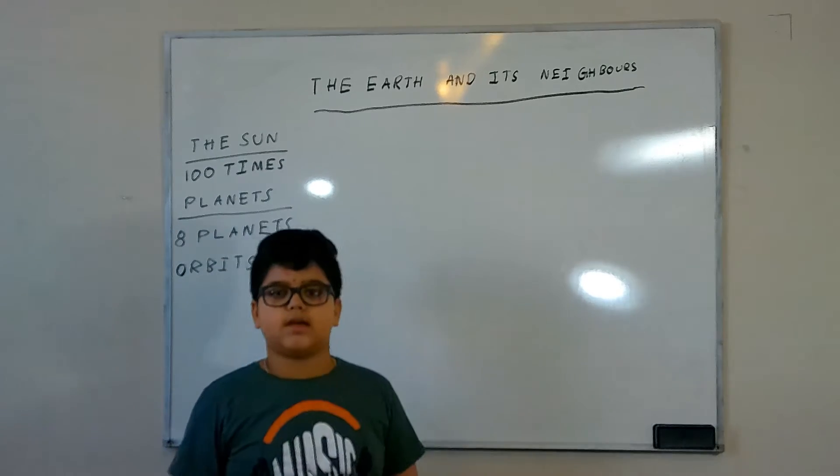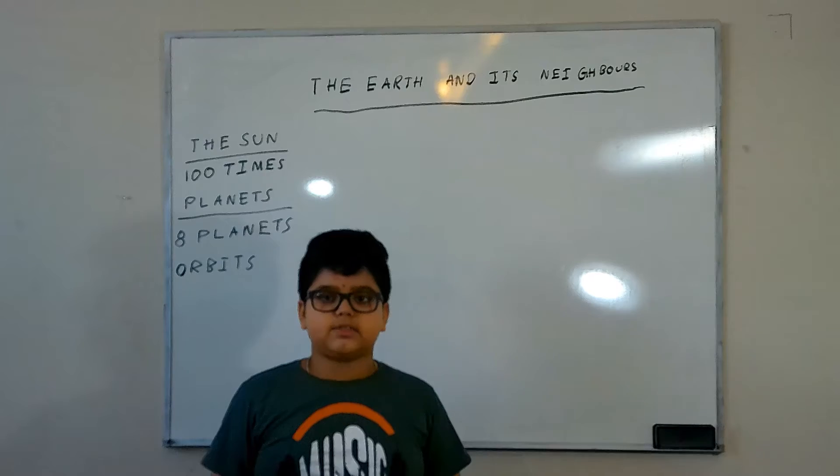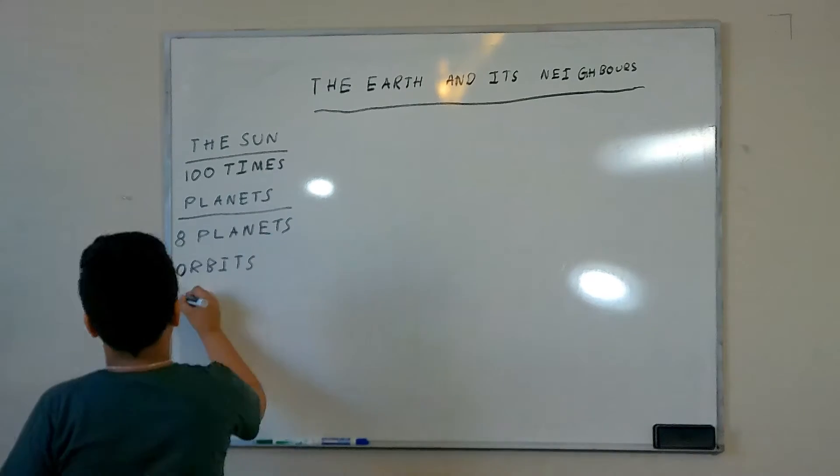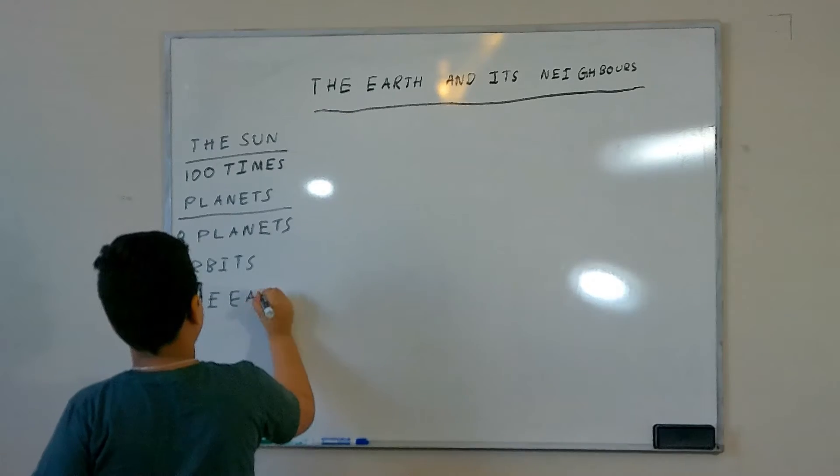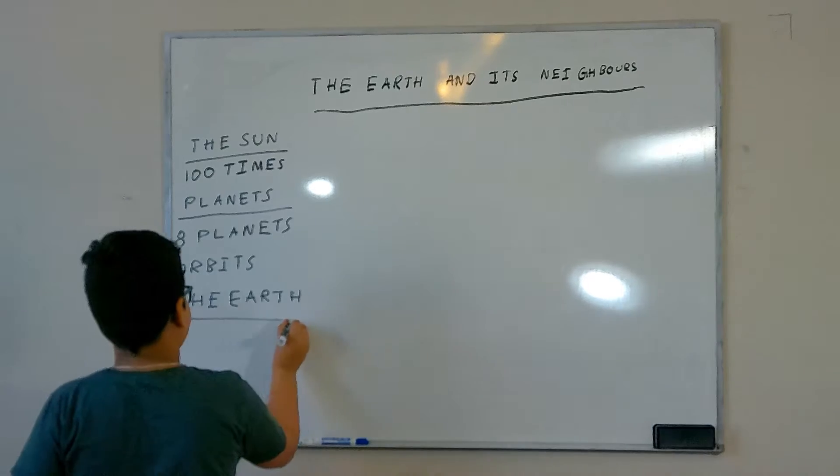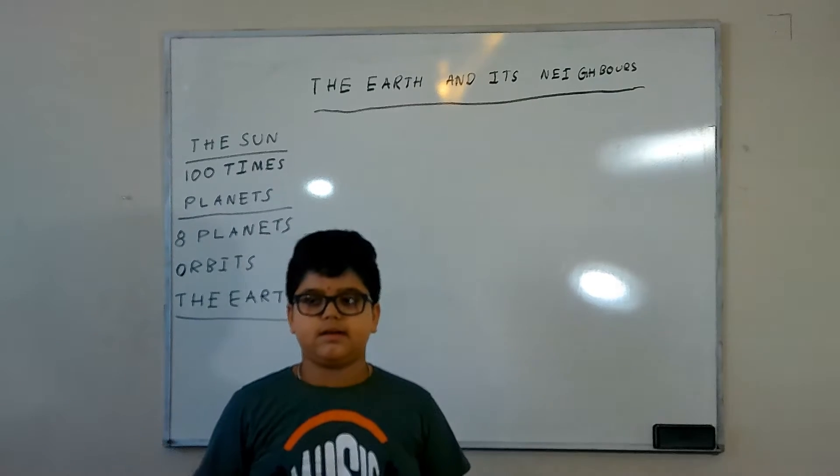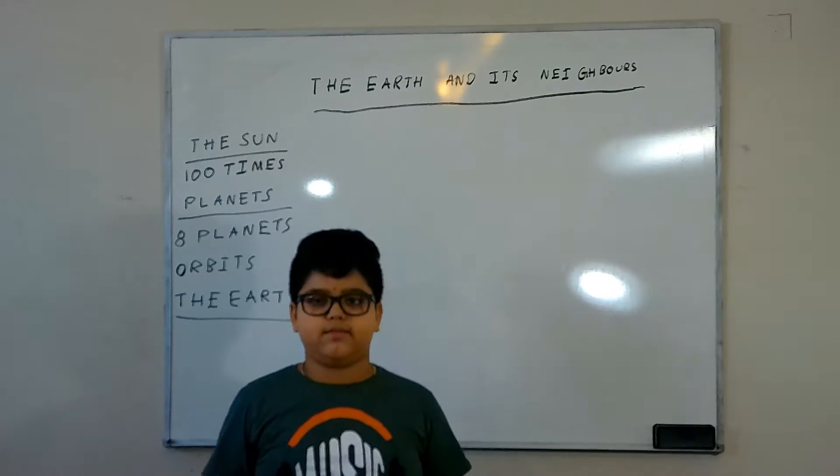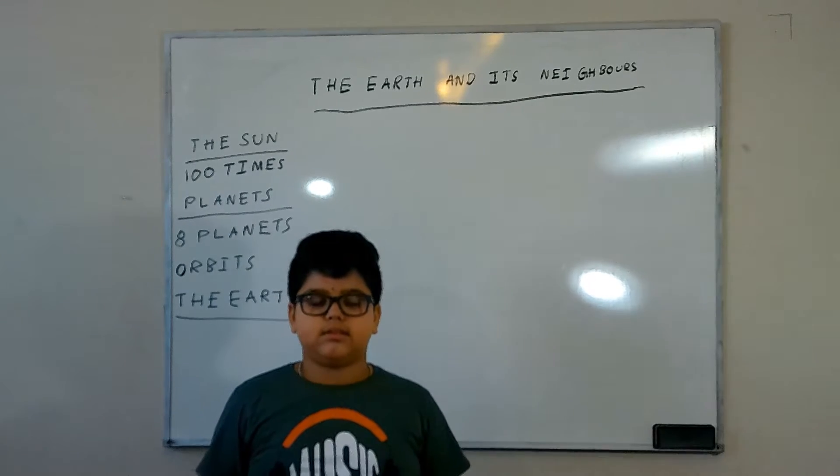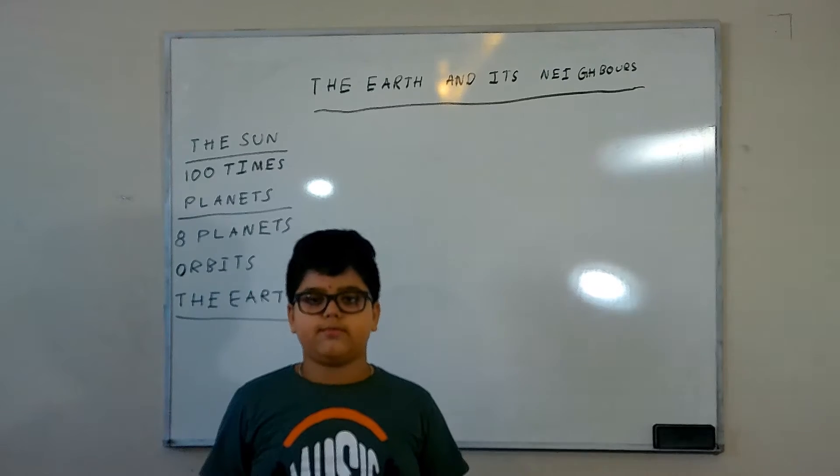The planets do not have their own light, they reflect the light of the Sun. Planets move around the Sun. The next one is the Earth, the third planet from the Sun. The Earth is the only planet in the solar system that has life. It has land, water and air to support its life. The earth is at the right distance from the sun and is neither too hot nor too cold for plants and animals to live.